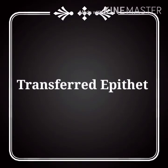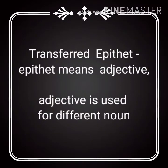The next figure of speech is transferred epithet. Epithet means adjective — an adjective which is transferred to a different noun. The adjective is used to describe a noun as we know, but here the adjective is used to describe a different or wrong noun. Grammatically, these sentences are correct, but logically, these sentences are incorrect.